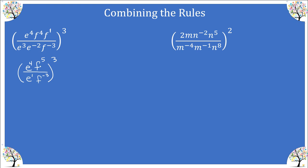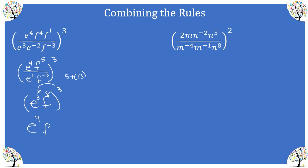The next rule to apply is the quotient rule. I have e and f all raised to the third power. The quotient rule says to subtract exponents: four minus one is three for e. For f: five minus negative three — keep-change-change — gives us eight. Now applying the power to a power rule, I have e to the ninth and f to the twenty-fourth.